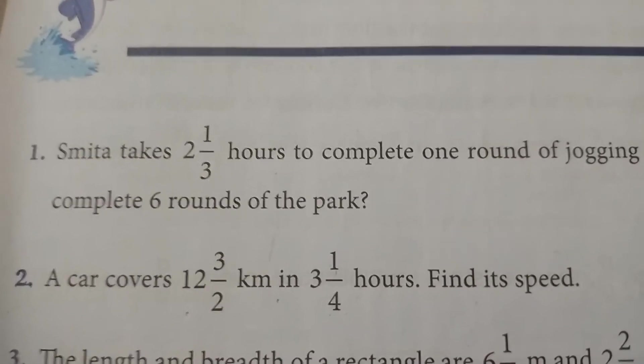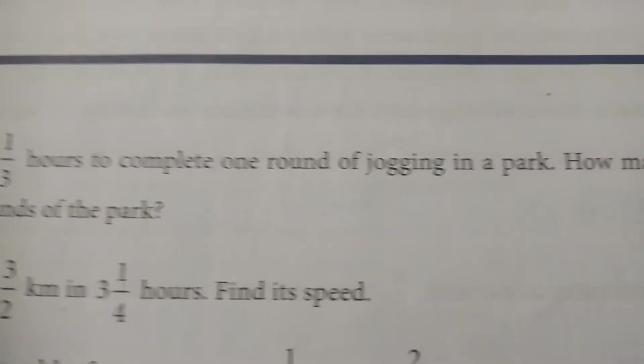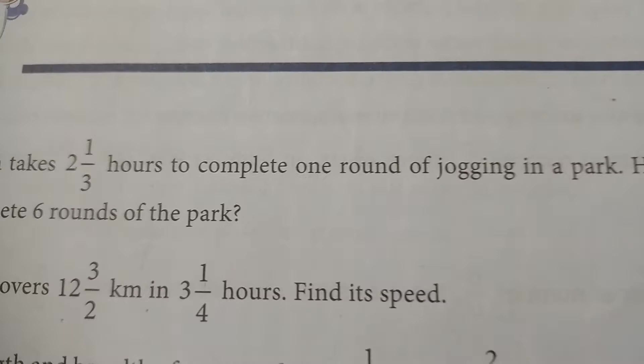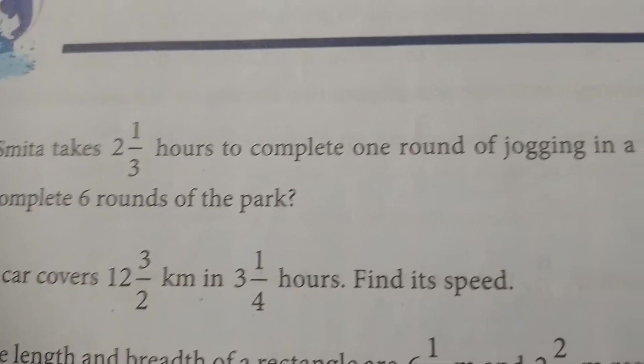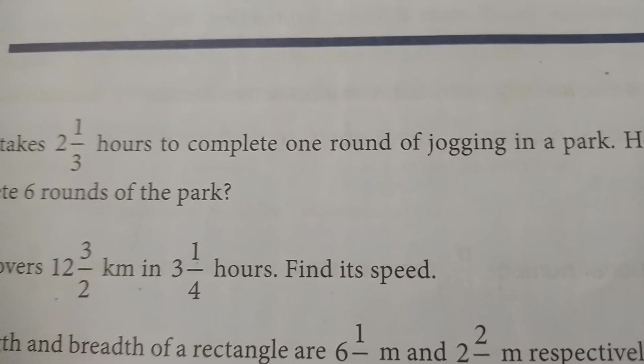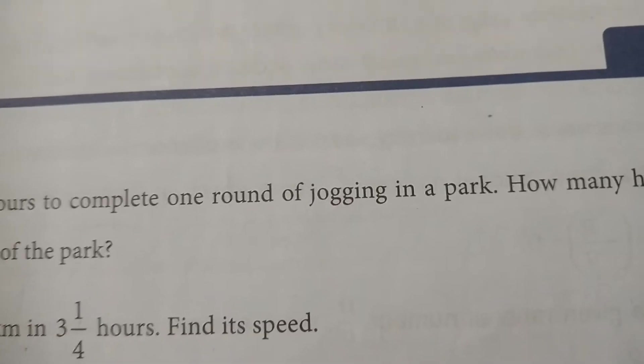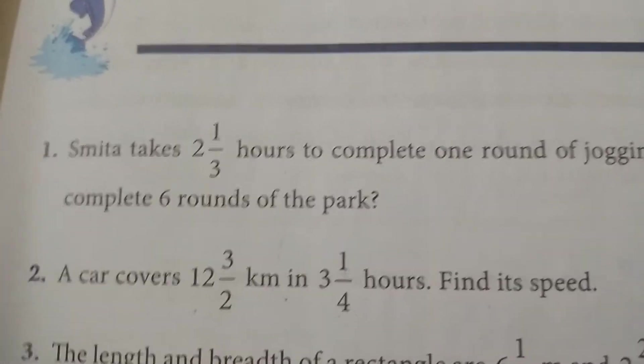First question: Samita takes 2 whole 1 over 3 hours to complete 1 round of jogging in a park. So Samita ko lagte hain 2 whole 1 over 3, yani 2 ghante aur us mein se 20 minutes to complete 1 round of jogging in a park. So jogging ka 1 round karne ke liye. So usko kitne ghante lagenge agar vo 6 rounds us park ke lagana chahti hai? So let's do it.